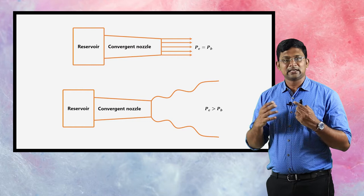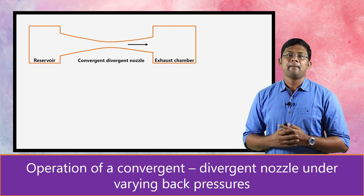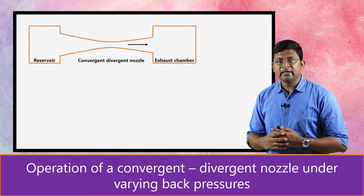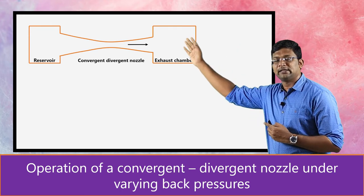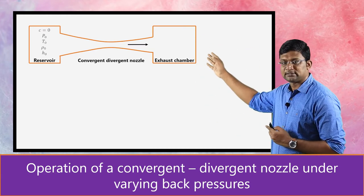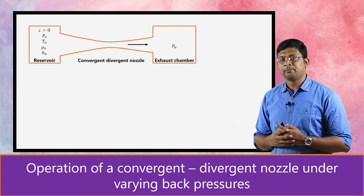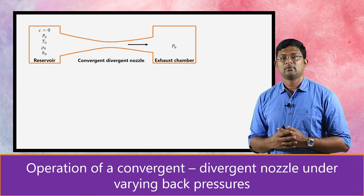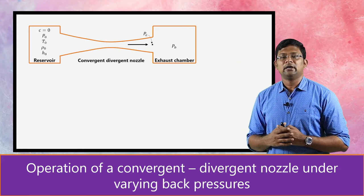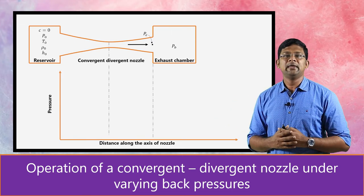Now let us discuss the variation of properties for a convergent-divergent nozzle when we vary the back pressure. Here is the experimental setup similar to the first one. We have a convergent-divergent nozzle with a reservoir attached at the entry and an exhaust chamber at the exit. The properties inside the reservoir are stagnation properties. Here also we maintain a back pressure pb adjusted by a valve, and at the exit of the nozzle we have the pressure pe.